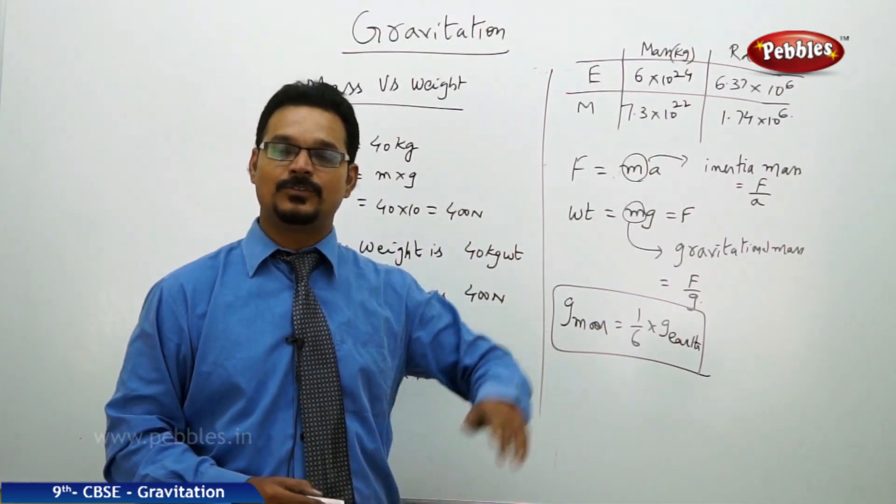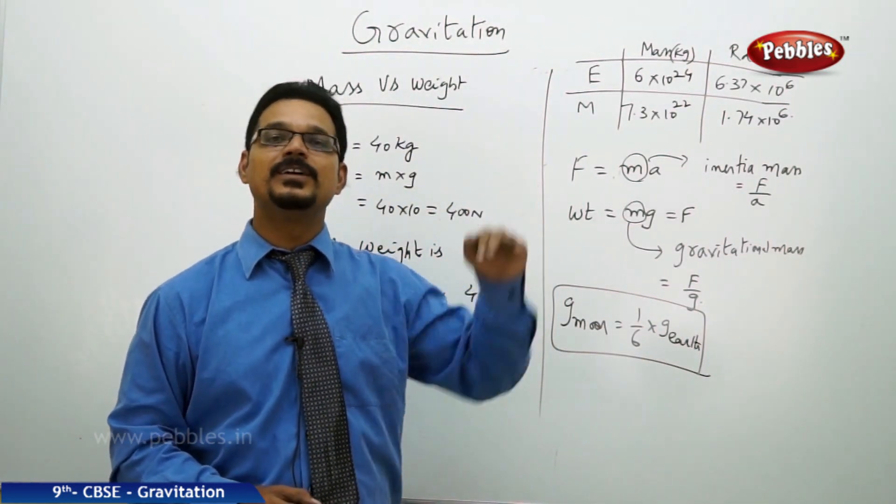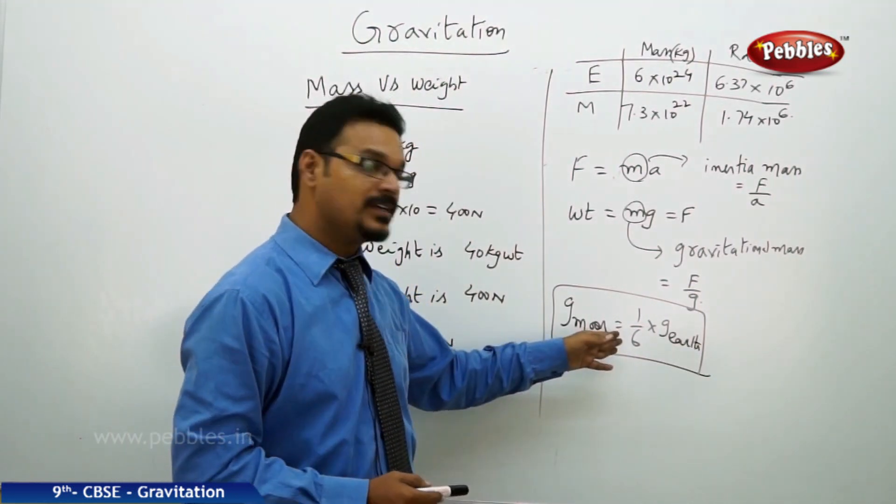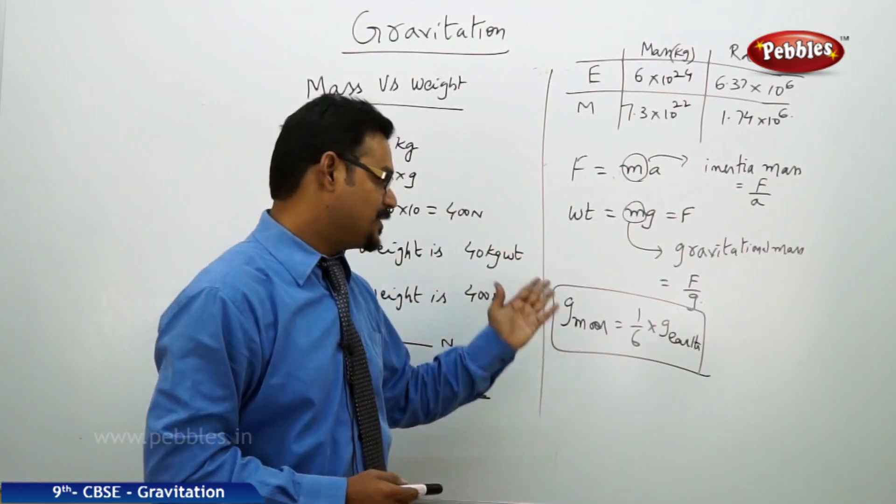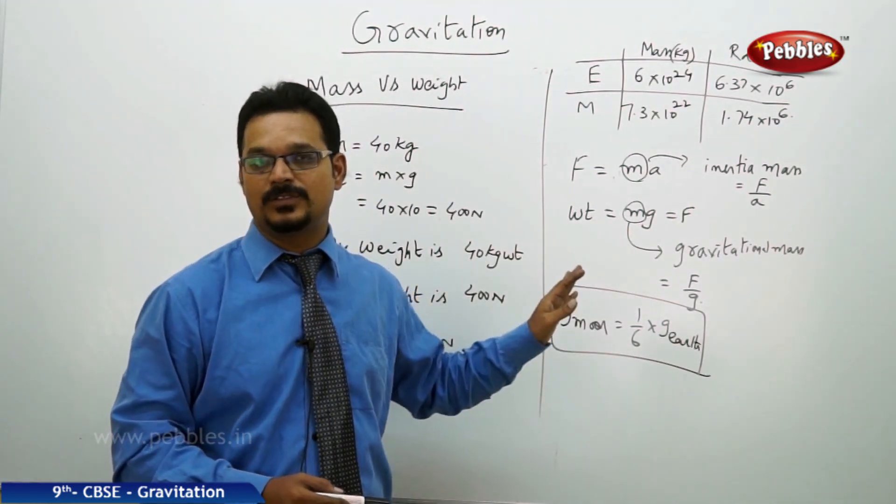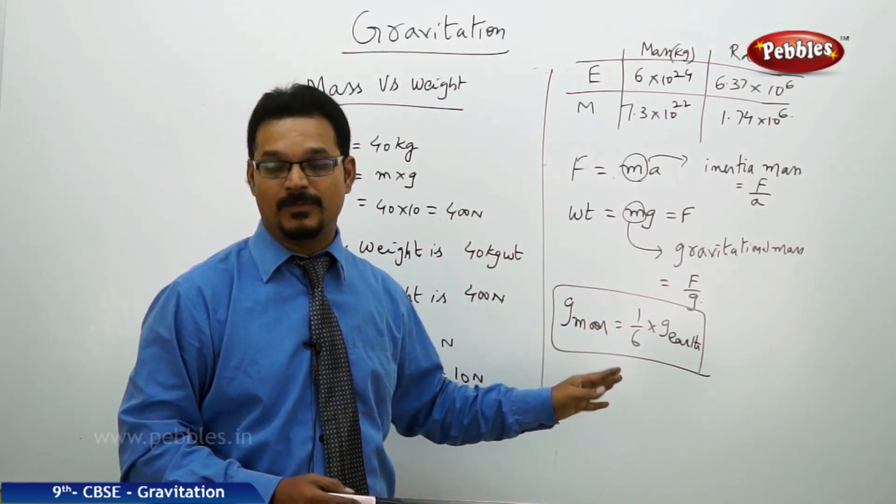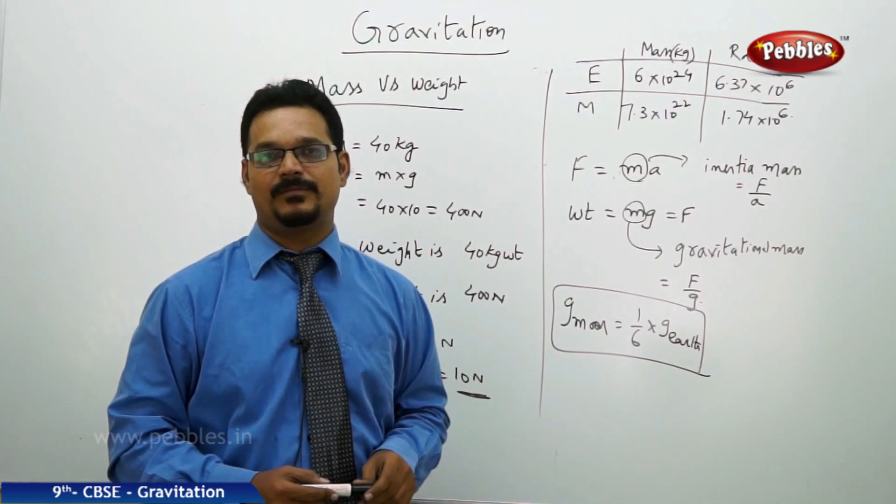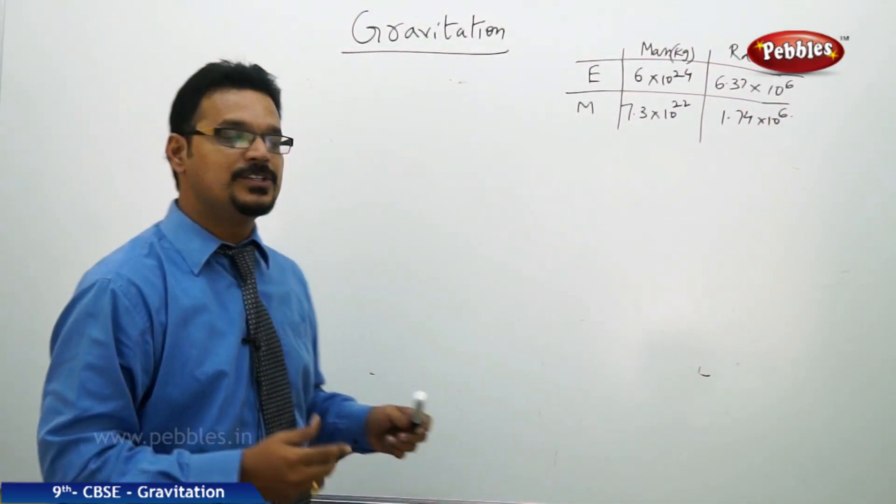So when you go to the moon, the g value decreases. Now the question is how do we find this relationship: g of the moon equal to one by six times g of the Earth? This can be solved by using the formula g equal to GM by r squared.